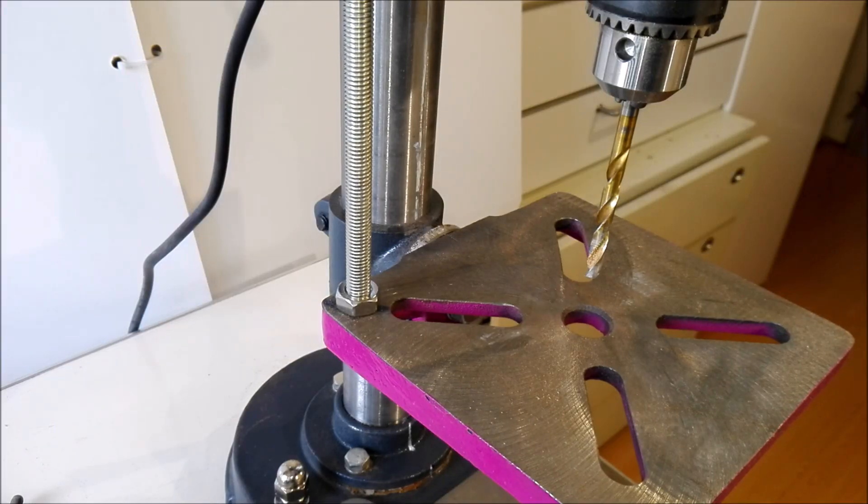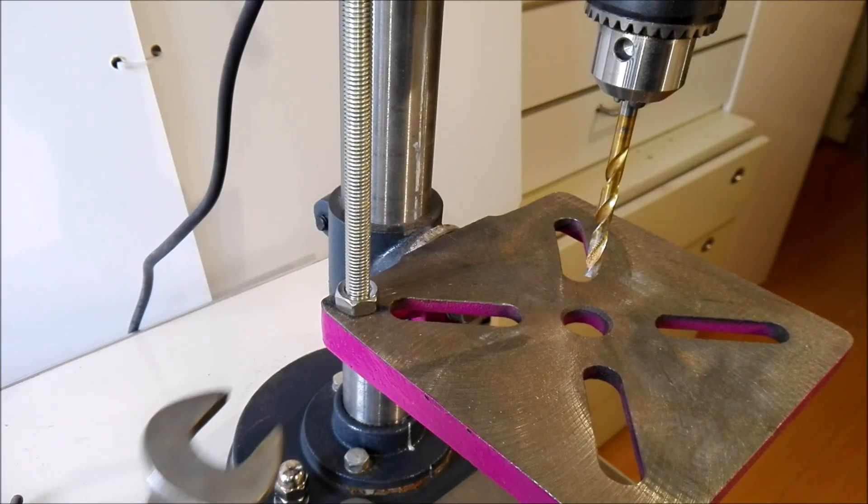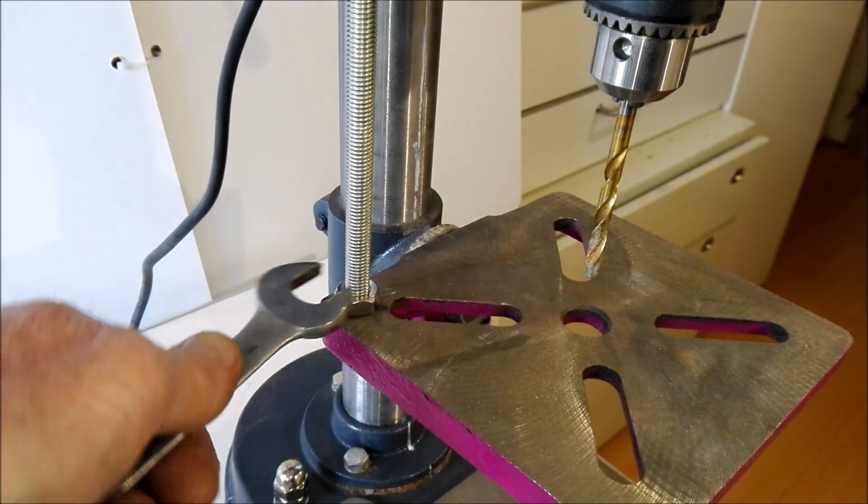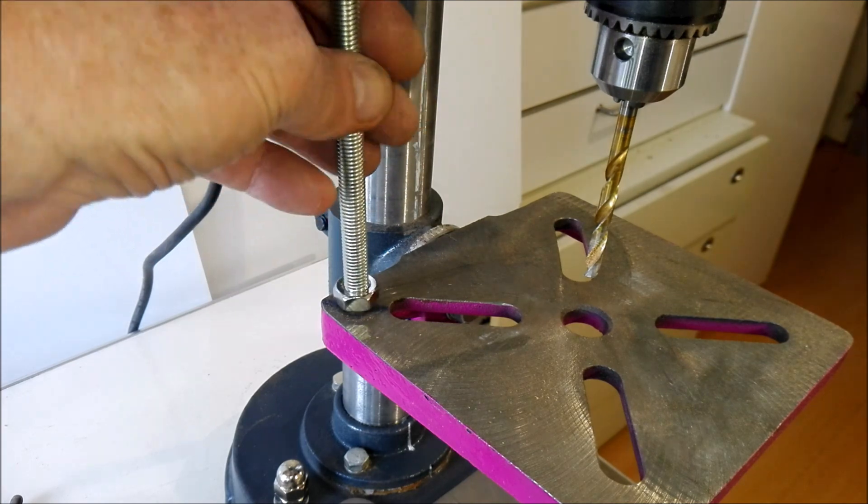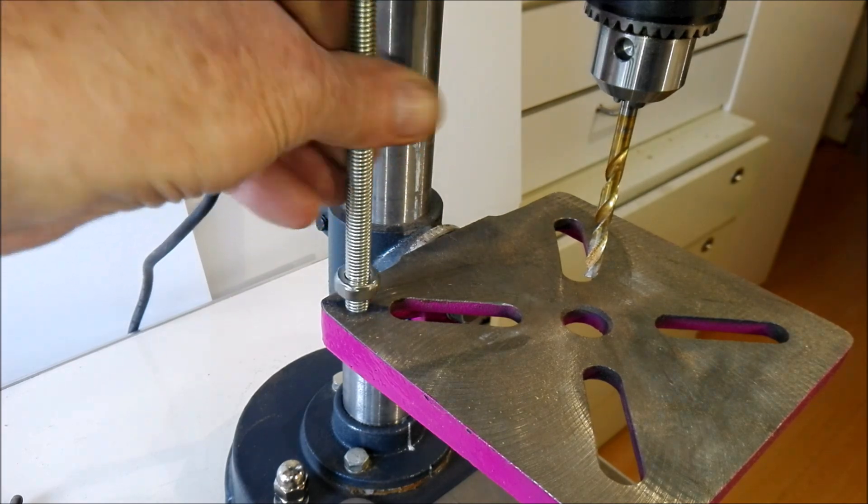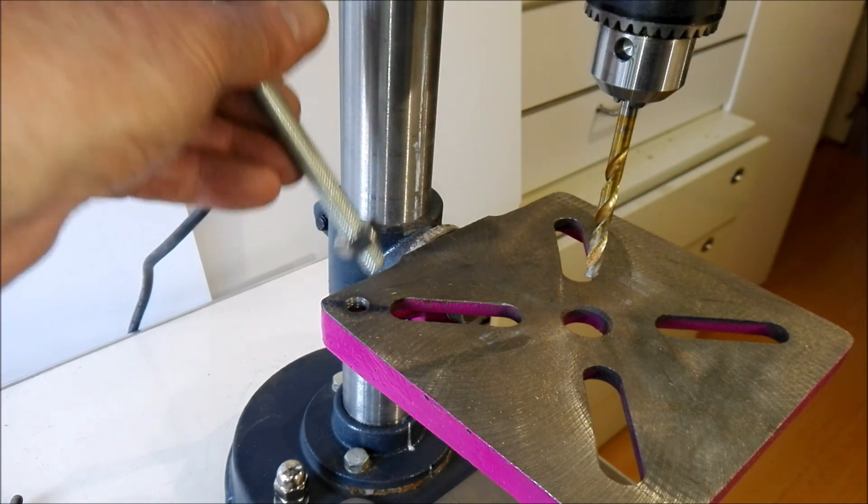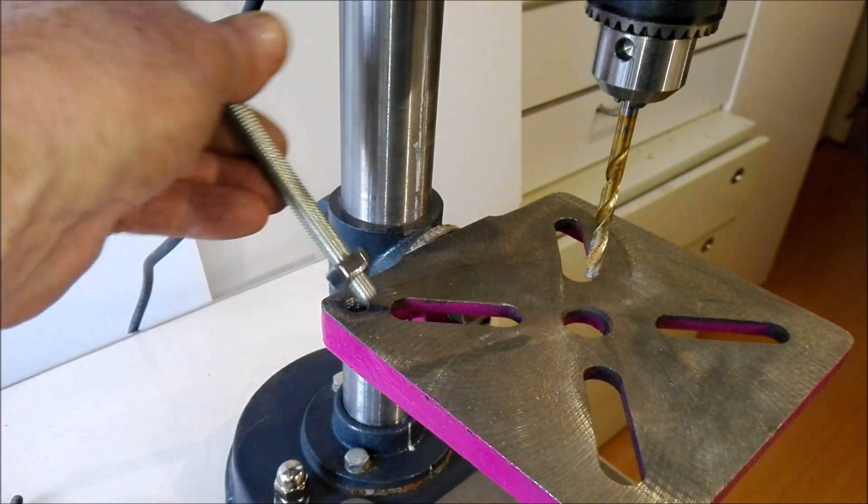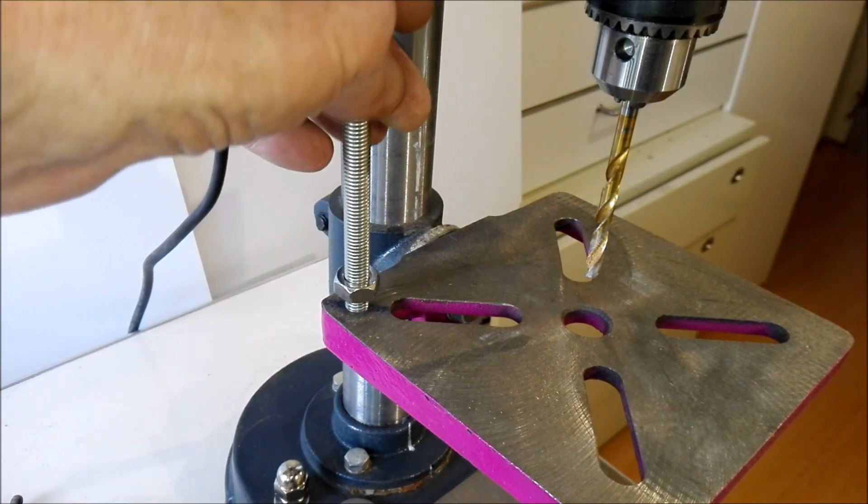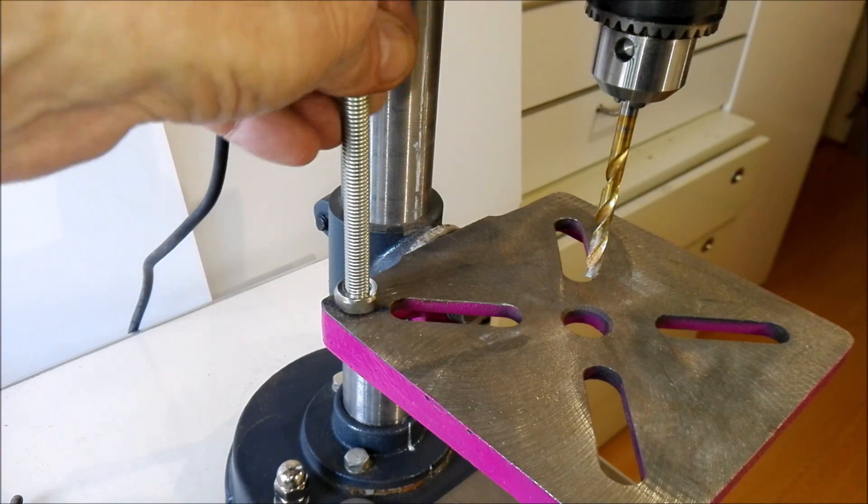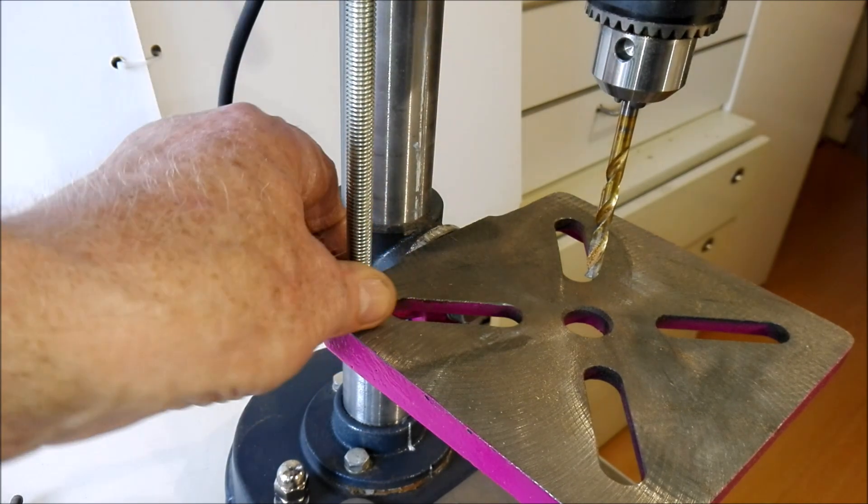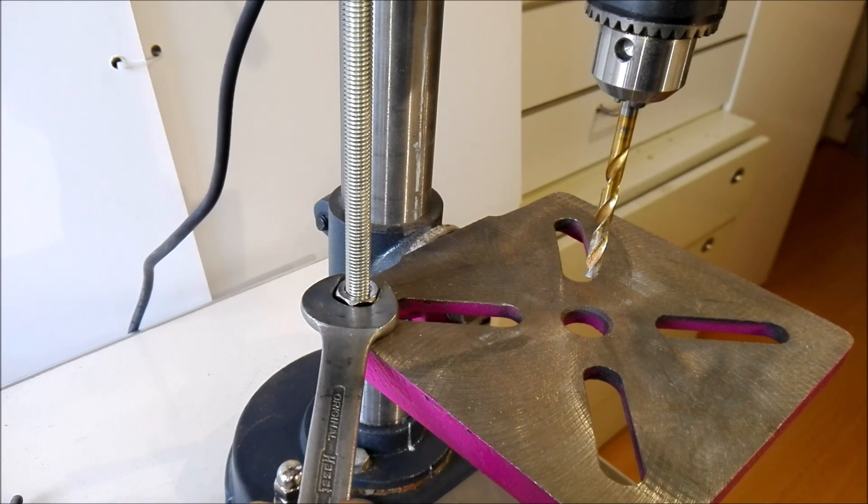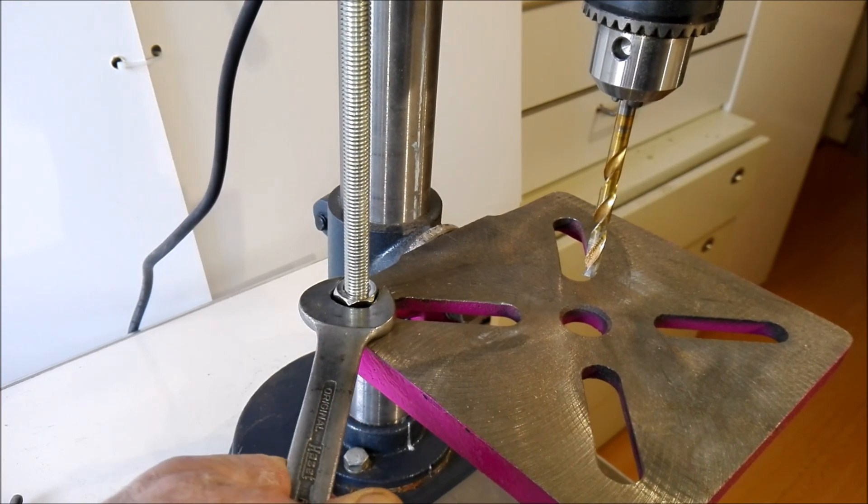Now this is then the mounting to the table. It's just a metric 10, it's not really magic. And I cut some thread in it, in the cast iron. Place this one in it, just a few threads, and then lock it off. Easy as that.